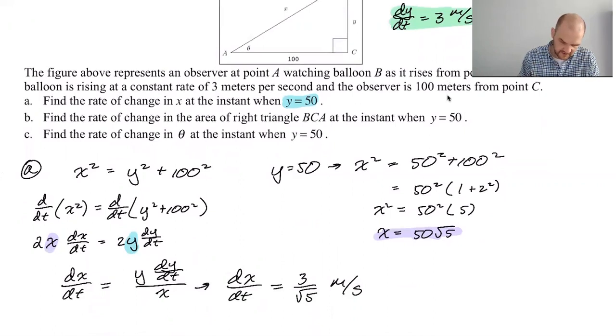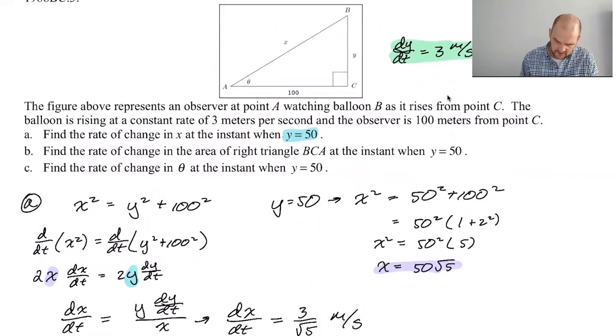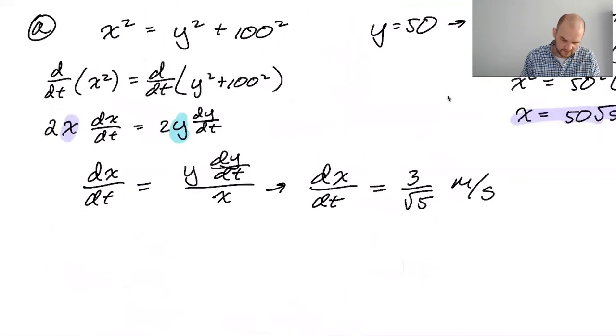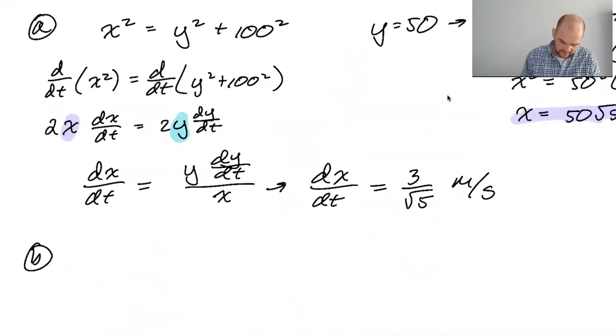So I'm going to go with that and let's see what B is. Rate of change in the area of the right triangle BCA, which I assume is the only triangle we have BCA, when y is equal to 50. It's really nice that y is always 50. So like things that we have found apply, like X is still 50 root five, dx/dt should still be three root five if we need it. So BCA is a triangle. So one half base times height is one half, 100 times y.